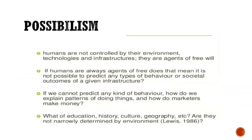If we say that the environment controls everything and humans can do nothing, then how can we explain patterns of behavior and how do market makers make money? If everyone's behavior and choices were the same — as determinism claims — then people in the market would make only one type of product and could not generate profits. There would be only similarity in everything.